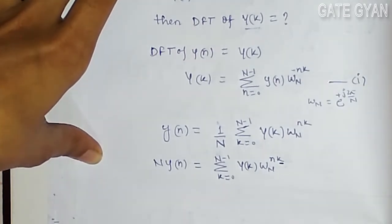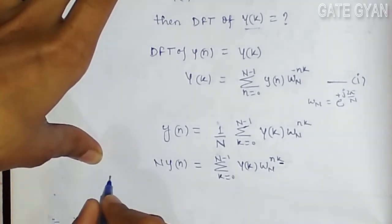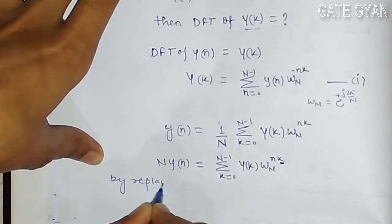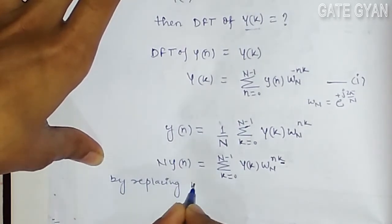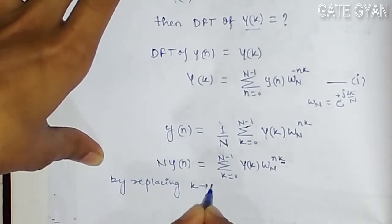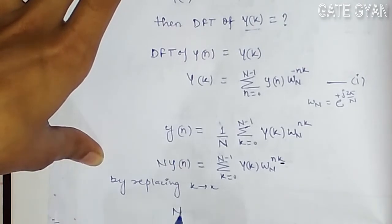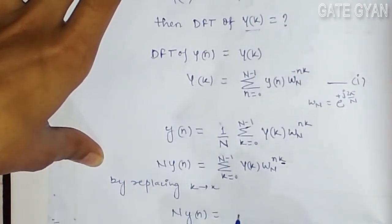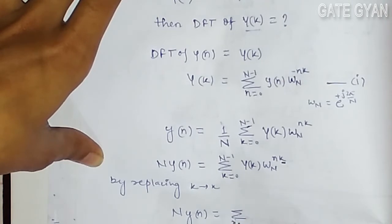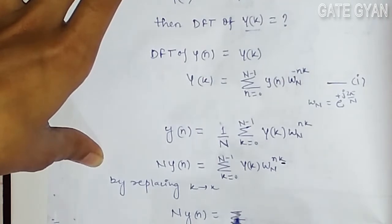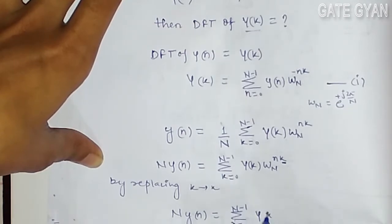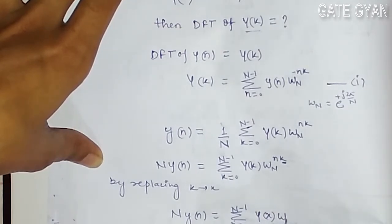In this expression I will replace k by x. So the expression becomes N·y[n] = sum from x=0 to N-1 of Y[x] times W_N^(nx). Wherever we had k it is now x.